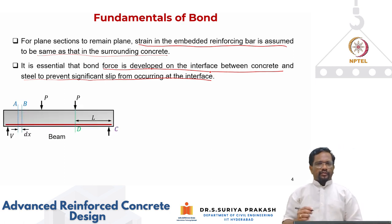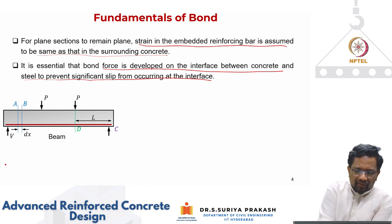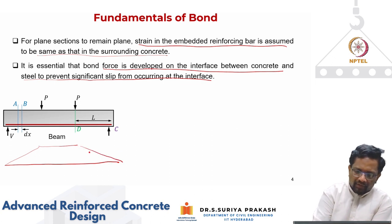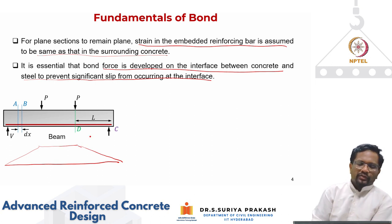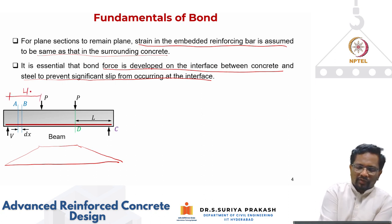We will take a simply supported beam subjected to two point loads. Looking at the bending moment diagram for this beam, it is going to vary linearly up to a certain length and then remain constant. Let us say the load is applied at L by 3.